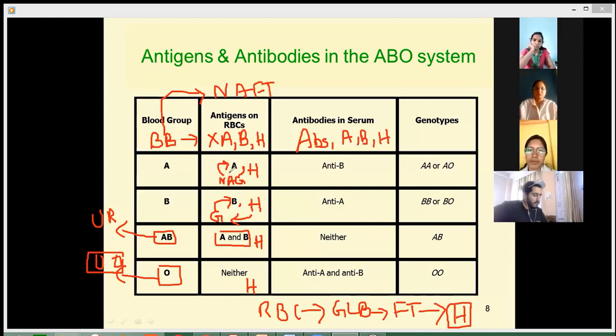A antigen is formed by the activity of N-acetylgalactosamine. H antigen interacts with N-acetylgalactosamine to form A antigen.